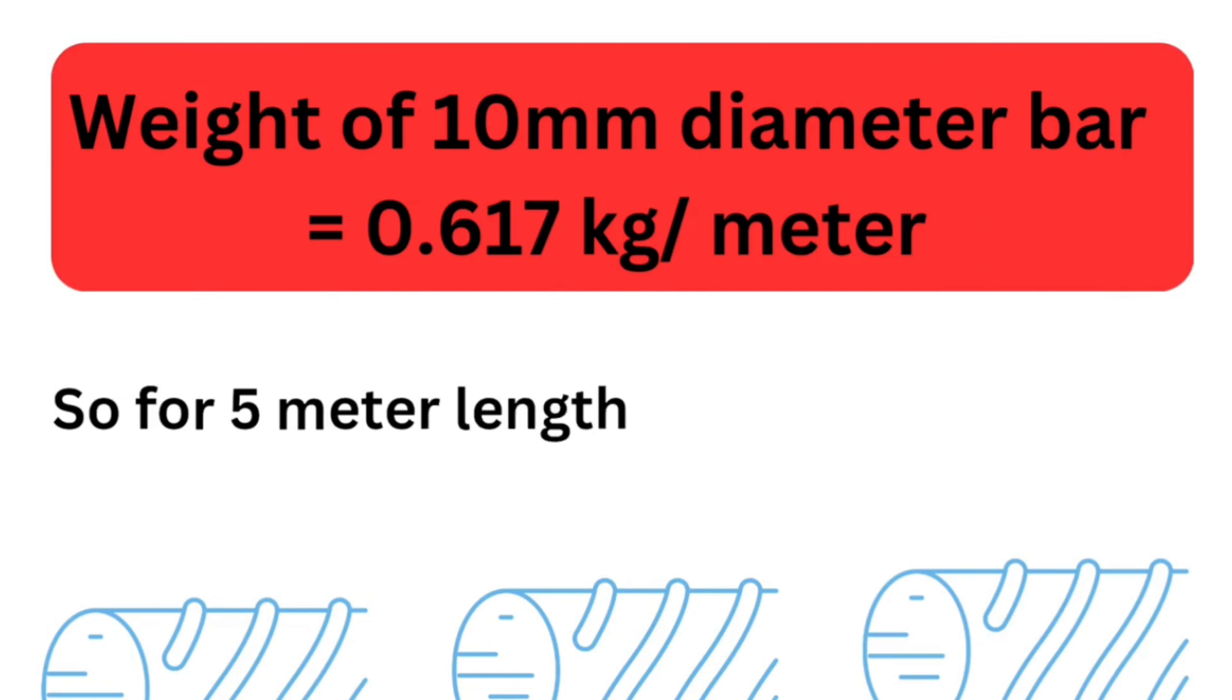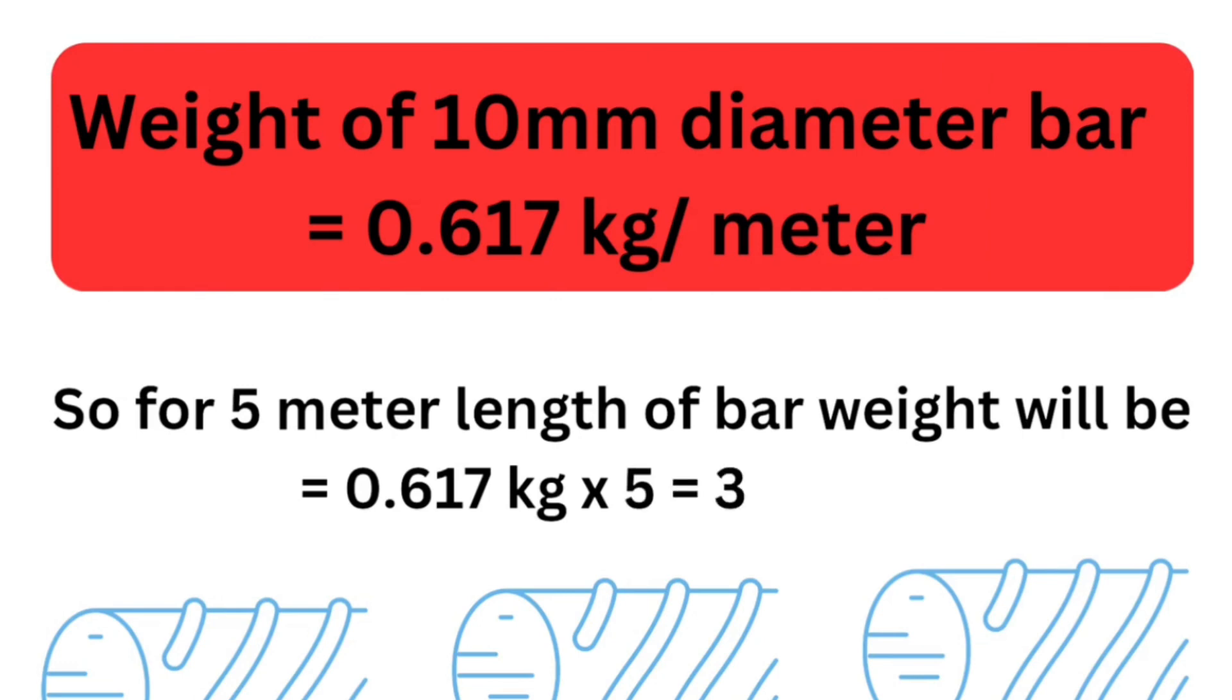So, for 5 meters, 5 multiplied by 0.617 equals 3.085 kilograms.